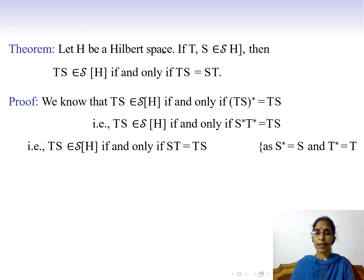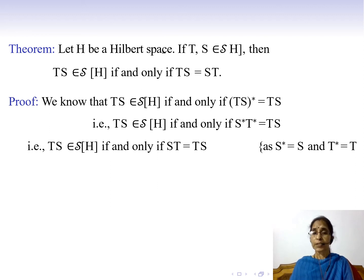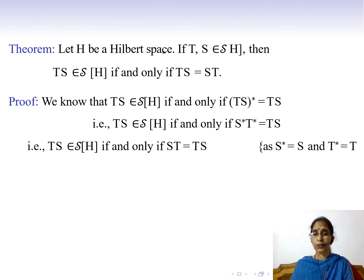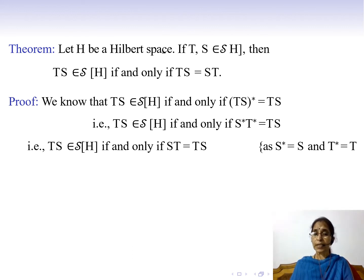The next theorem states: let H be a Hilbert space and T and S be self-adjoint operators on H. Then TS is a self-adjoint operator on H if and only if TS = ST. Proof: TS ∈ S(H) if and only if (TS)* = TS, i.e., S*T* = TS. Since S and T are self-adjoint, S* = S and T* = T, so this becomes ST = TS. Therefore TS is self-adjoint if and only if TS = ST.